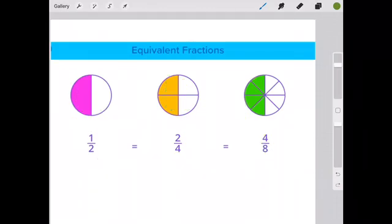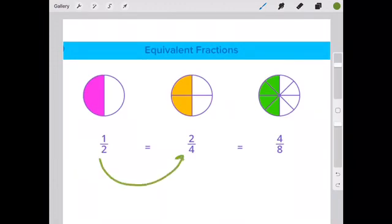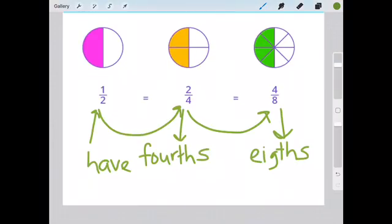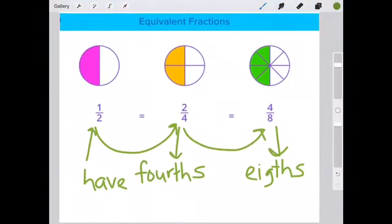Okay, so let's have a look at this again. One half is equivalent to two fourths, and two fourths is also equivalent to four eighths. So I hope you enjoyed learning about equivalent fractions.